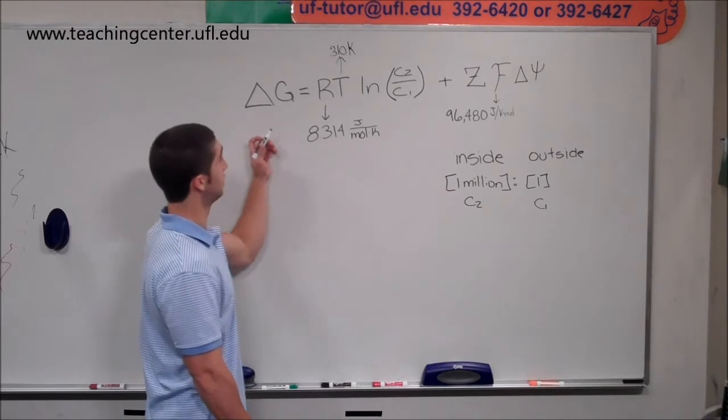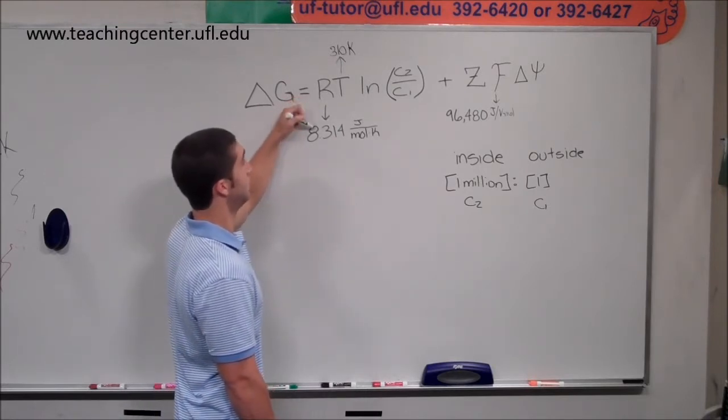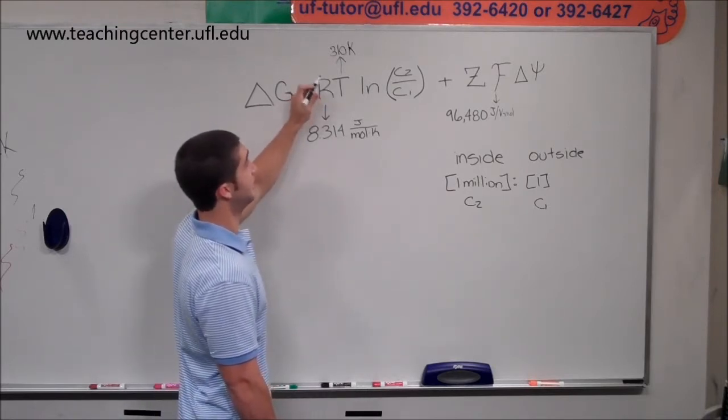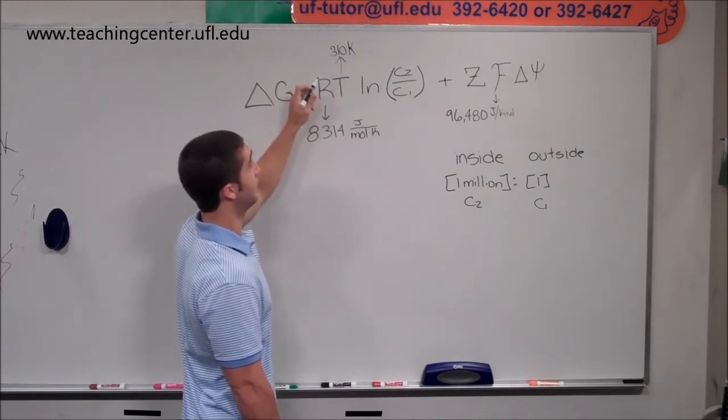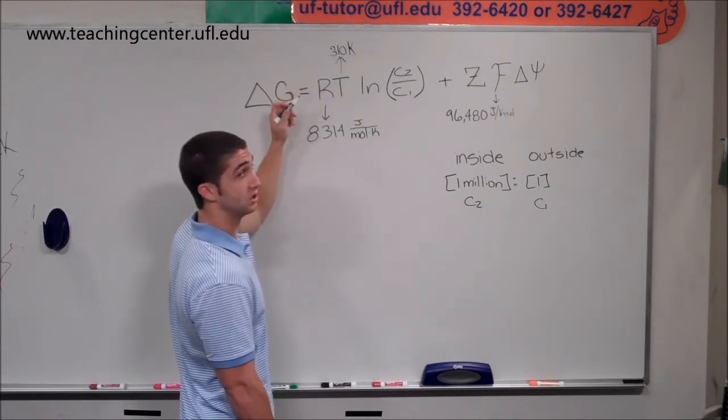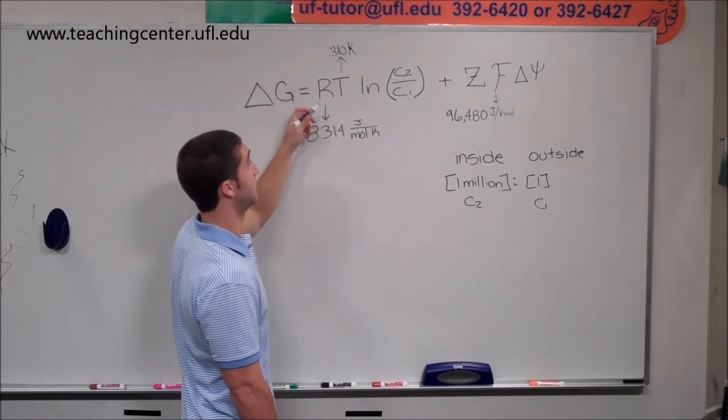So you're going to use this equation, which is delta G equals the gas constant, which will be given, times the temperature in Kelvin, and it's got to be in Kelvin, and if they give you Celsius, it's just Celsius plus 273 will give you that temperature in Kelvin.